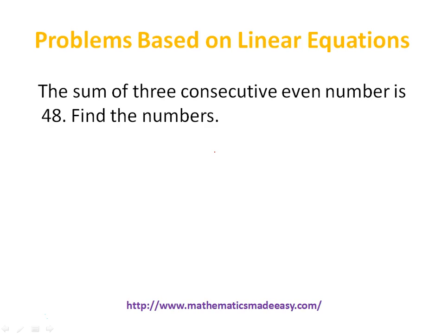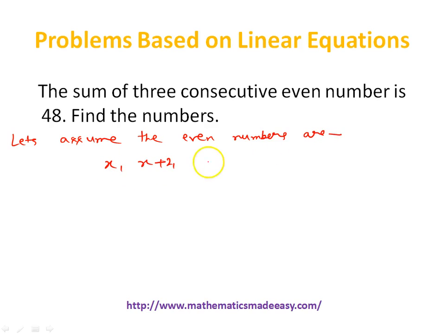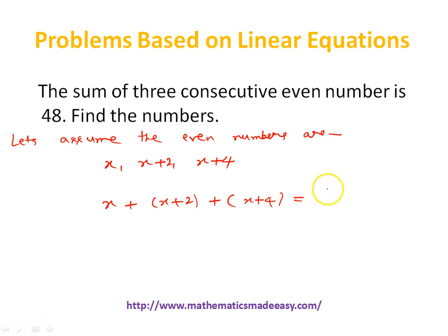Moving to the next question: The sum of 3 consecutive even numbers is 48 — find the numbers. Similar to a previous question on consecutive odd numbers. We assume the consecutive even numbers are x, x plus 2, and x plus 4. The sum x plus (x+2) plus (x+4) equals 48. We have a linear equation in x.